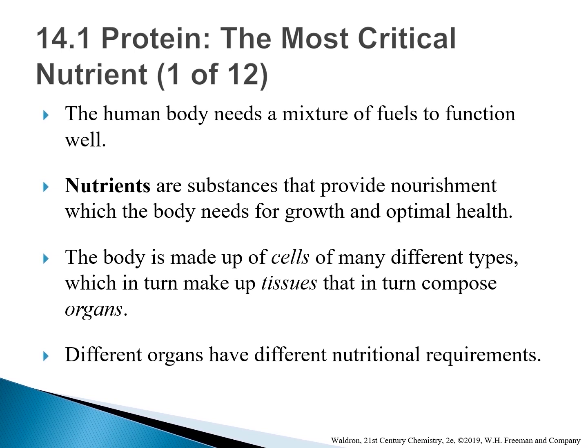The human body is a collection of fluids and cells. Cells make up tissues that in turn compose organs — the structural units in the body that serve a particular function. Different organs such as the heart, bone, and brain have different nutritional requirements.